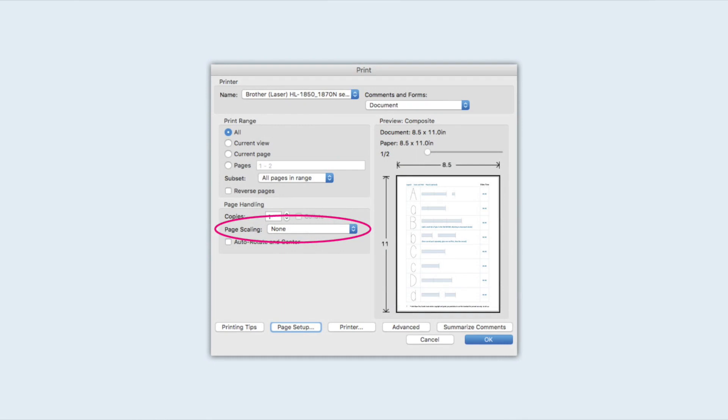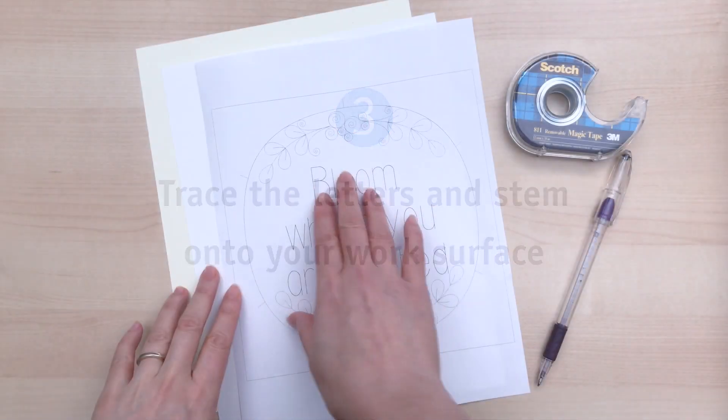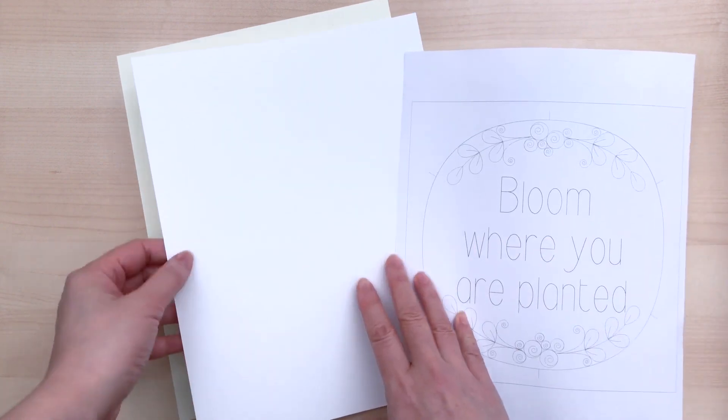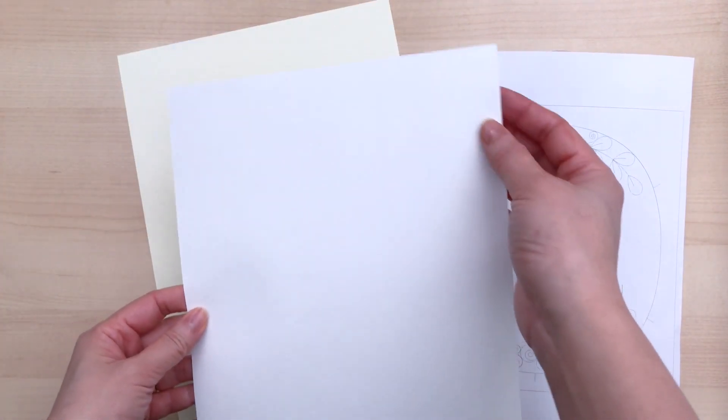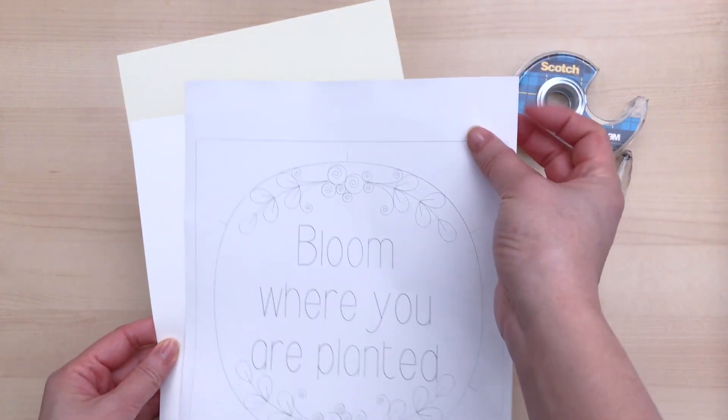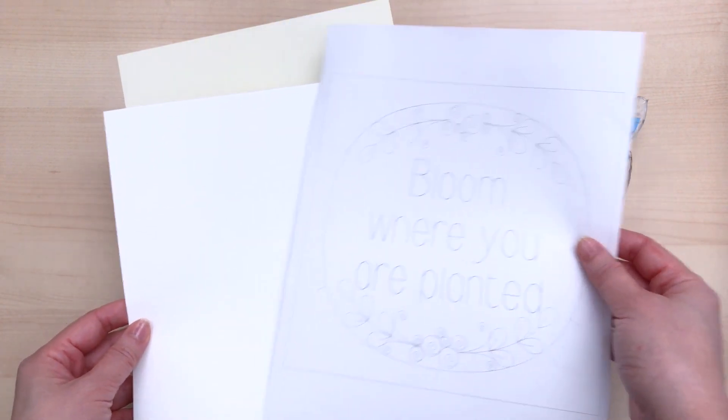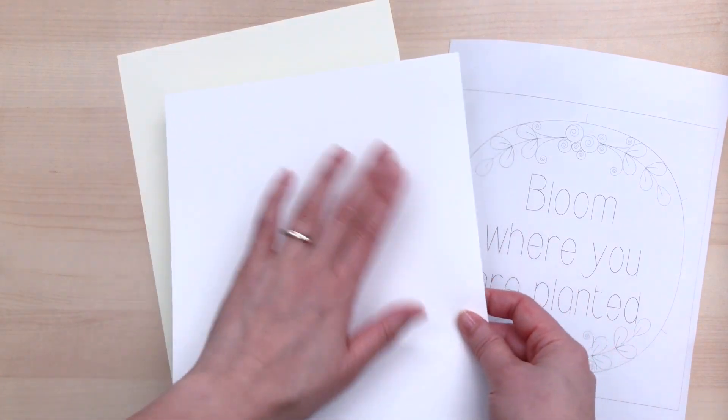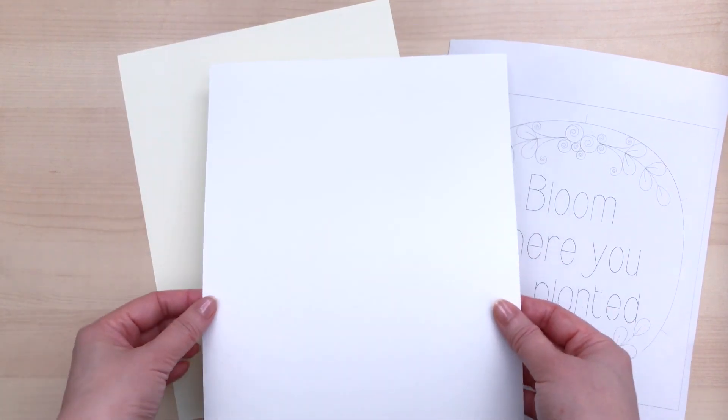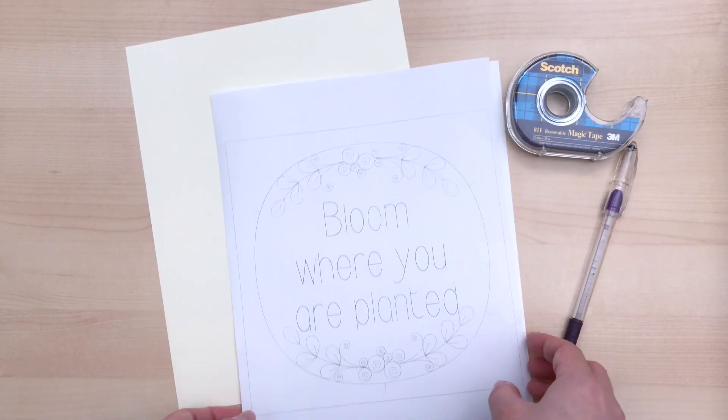For step three we're going to use the template to trace the letters and stem onto our work surface. Now for my work surface I prefer to use a stiff cardstock like this 80 pound coverweight stock. You can hear how different that is compared to computer paper. Now this kind of paper is way too thin because after you've glued all those elements on the page you don't want it to warp and buckle. So we're just going to put the template on top of our work surface.